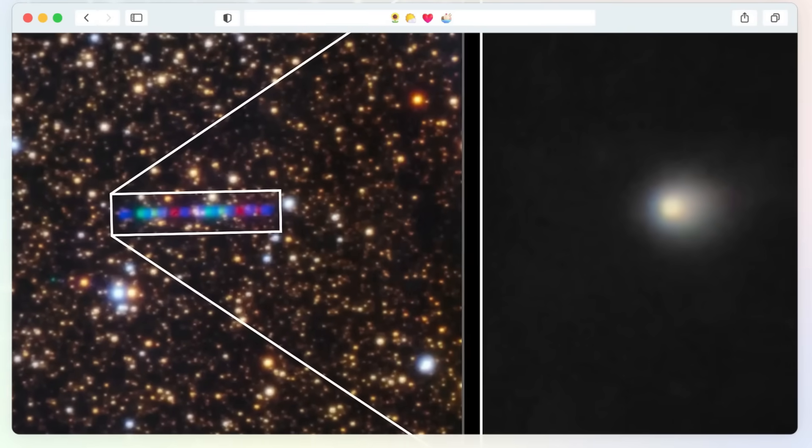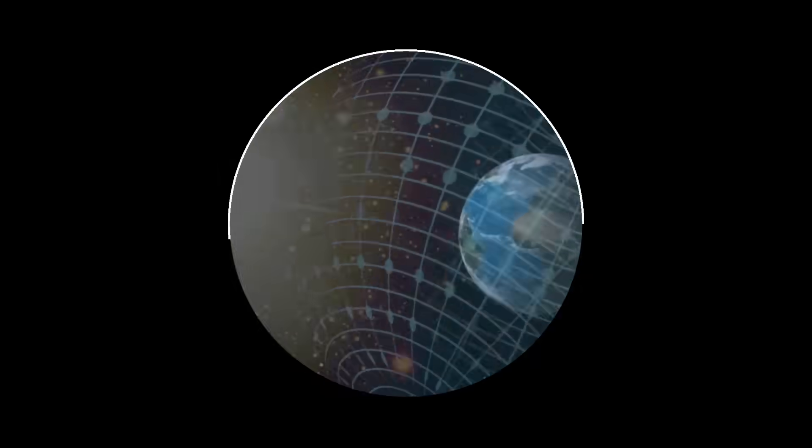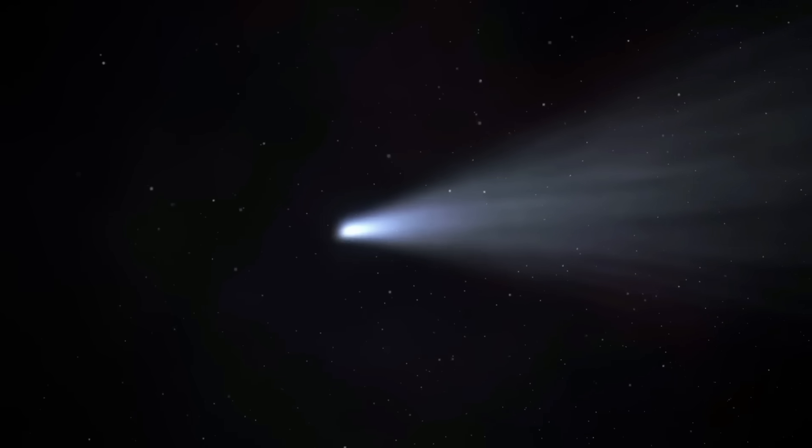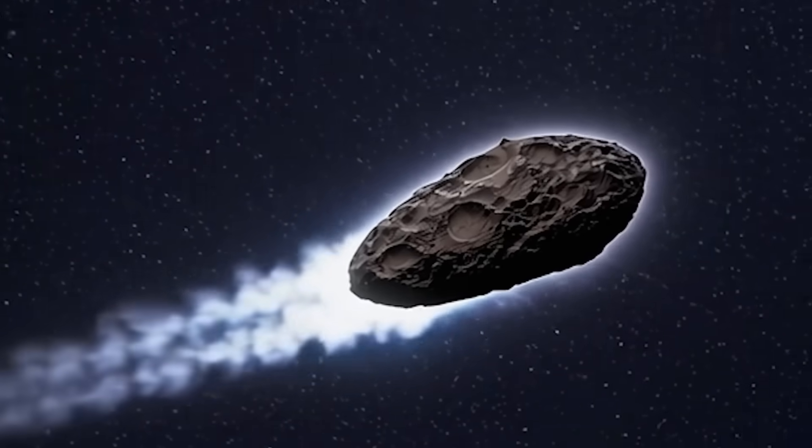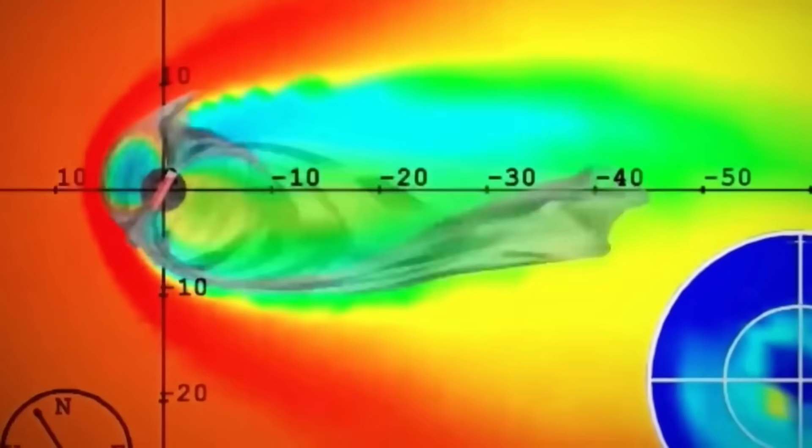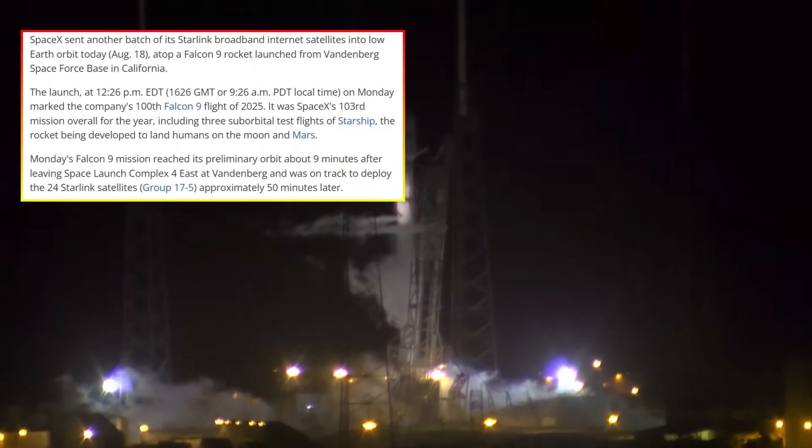A Falcon 9 aligned with 3i/ATLAS's path. Signals, anomalies, alignments - they all point to the same possibility. This wasn't an ordinary launch. This was an attempt to reach something from another star. Look at the evidence we've uncovered: magnetosphere spikes during the exact intercept window, ancient monuments aligned with ATLAS's trajectory, military payloads with no public explanation, scientists proposing desperate measures to redirect billion dollar probes. These aren't random coincidences. They're breadcrumbs leading to the same conclusion: humanity just took its first serious shot at intercepting an interstellar visitor.